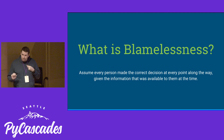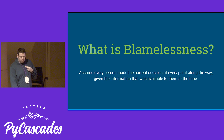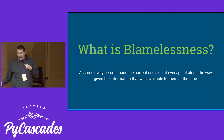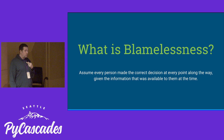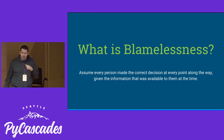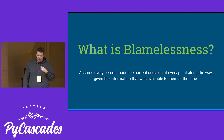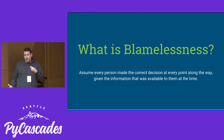So you're sold on postmortems. Now what was the bit about being blameless? Being blameless boils down to one thing: you assume that every person made the correct decision at every point along the way given the information that was available to them at the time. This means that if your causes — root or proximate — include something along the lines of human error, you haven't really identified your causes. By approaching postmortems blamelessly, you start with the assumption that human error is not a valid conclusion.